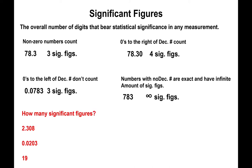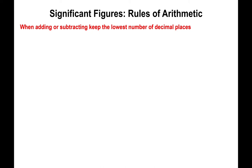Looking at three examples: the first number has a zero sandwiched between non-zero numbers, so that zero automatically counts — giving four significant figures. The second example has two leading zeros with no non-zero number preceding them, so those don't count, but the last zero does since it has a non-zero number before it — giving three significant figures. The last one, depending on context, has either two significant figures if it's a measurement, or an infinite number if it's an exact value.